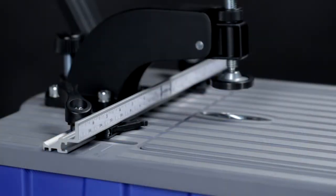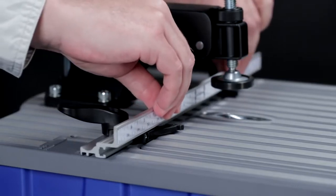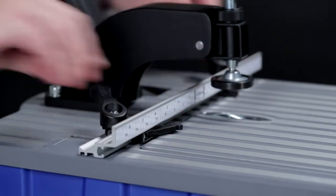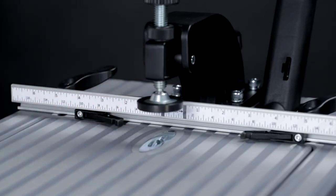To ensure perfect pocket hole placement, the Foreman features a tool-free adjustable fence that positions your workpiece for precise pocket depth, and a pair of adjustable, spring-loaded stops that provide repeatable accuracy.